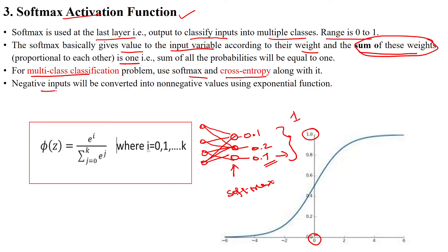The negative inputs will be converted into non-negative values using the exponentiation function. The exponentiation formula is: e to the power of i divided by the summation from j equals 0 to k of e to the power of j, where i ranges from 0 to k.